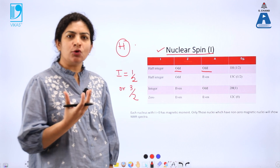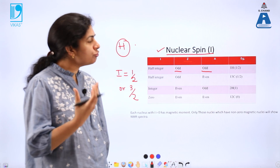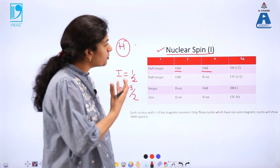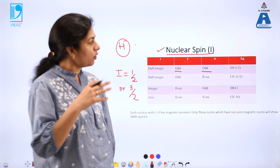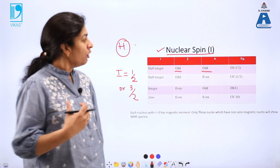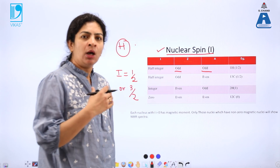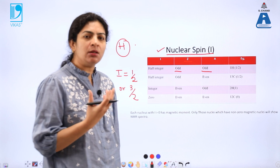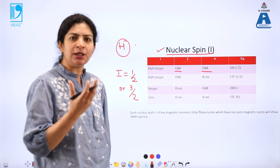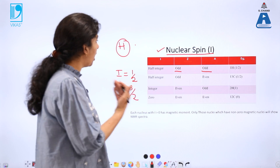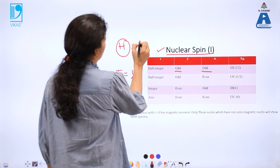The nucleus, being composed of neutrons and protons, is a charged species. There are no set rules for calculating nuclear spin, but based on the value of the atomic number and atomic mass, we can put all nuclei into various categories. Those nuclei which have both mass number and atomic number odd are put into the category of nuclei with half-integral spin — their nuclear spin is either one-half or a multiple of one-half. Proton is one such example, with I equal to one-half.